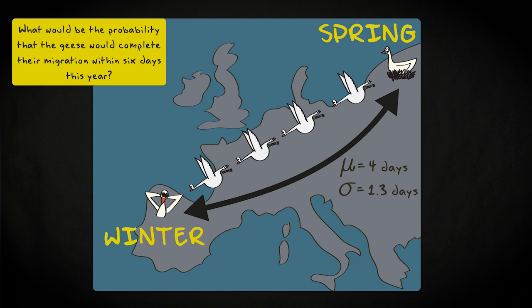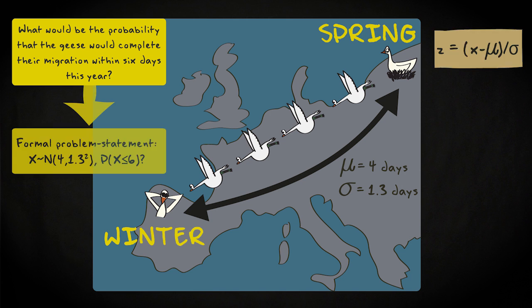Now, what would be the probability that the geese would complete their migration within 6 days this year? This is the formal way to state the problem. Try to answer it.